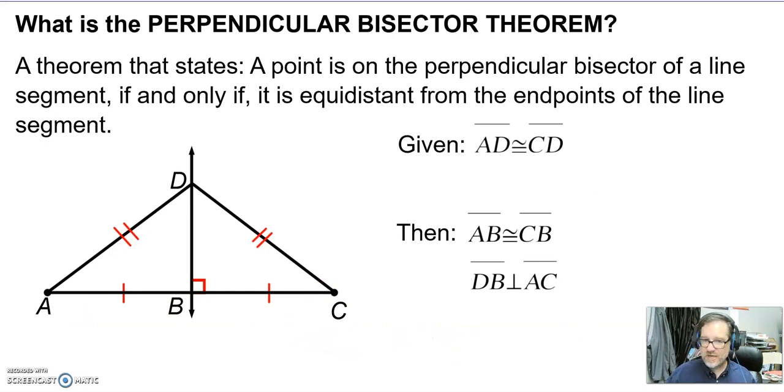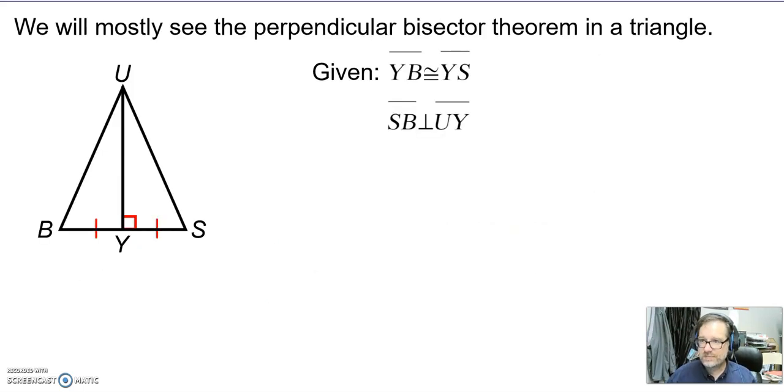So it's just the opposite. I can give you the sides are congruent, then you can say it's a perpendicular bisector, or I give you the perpendicular bisector and you tell me the sides are the same. Now when we see these, we're going to have them mostly in triangles.